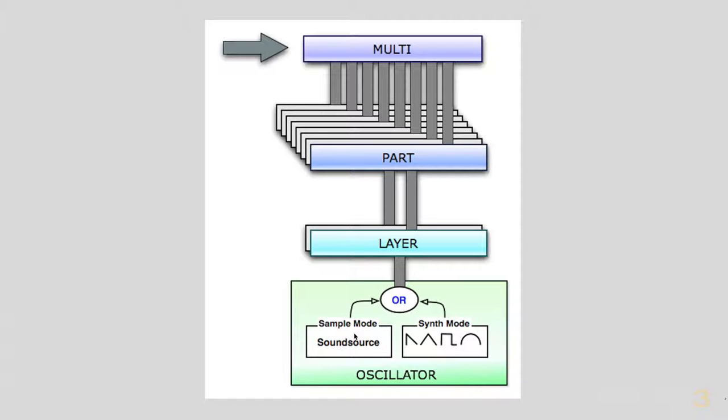To summarize, Omnisphere is a multi-timbral instrument. We work within a multi and each multi contains up to eight parts. We load patches into parts. Each part is comprised of two layers, and each layer can be based either on a sample mapping called a sound source or raw oscillator waveforms called synth mode.